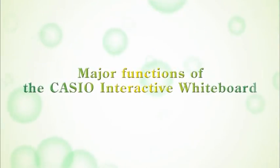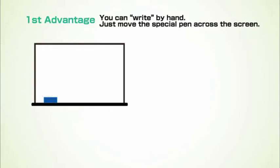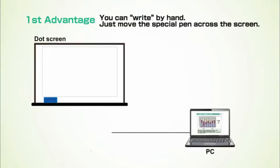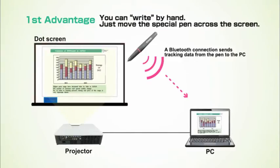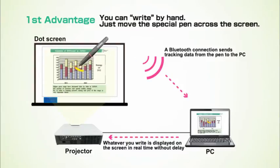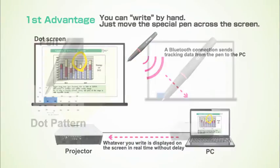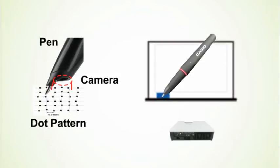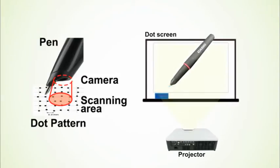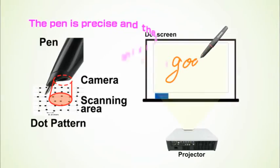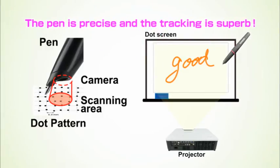The major functions. First advantage. Casio's digital pen and screen allow for easy operation. Everything can be operated using the pen without the help of a PC. The camera inside the pen uses dot pattern recognition to accurately determine its position, allowing smooth tracking.